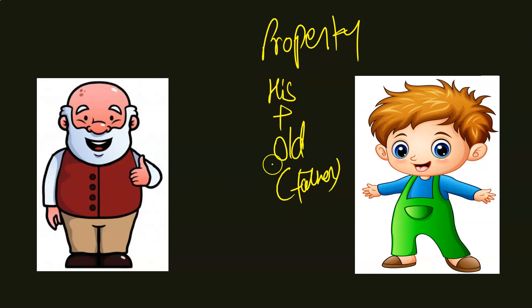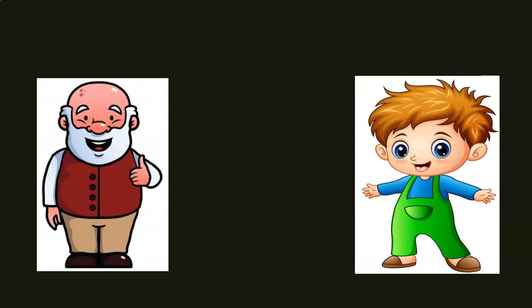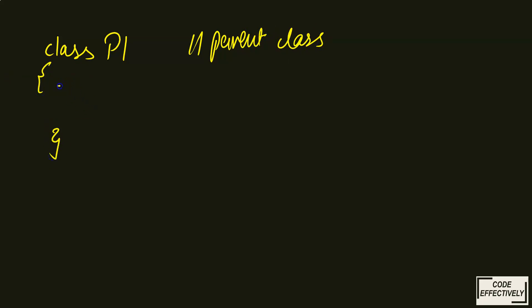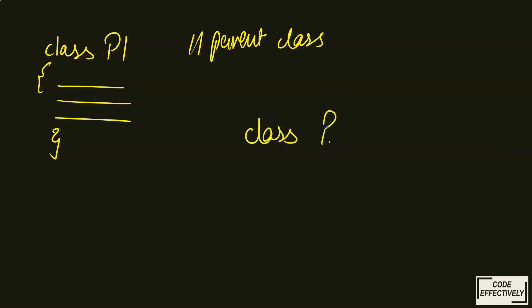Together, the child will have his own property as well as his father's property. So this is inheritance — the child directly or automatically inherits the property of his father. In the same way, we have inheritance in Java. For example, there is a class — let's call it the parent class — and it has some methods.